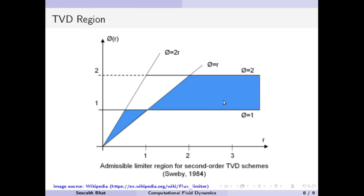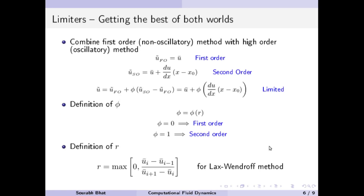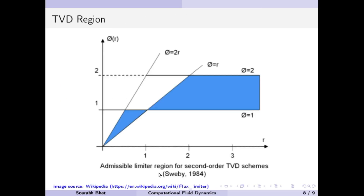There are various limiters which lie within this blue region. On this plot, r is the ratio of the neighboring points — we have no control over it, as it is decided by the solution itself.